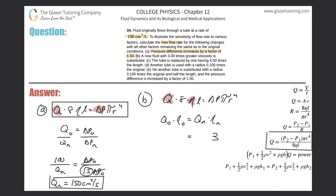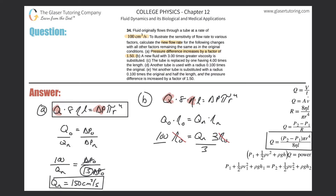We represent the new viscosity as three times the old viscosity. I'm solving for the new flow rate, and the old flow rate was 100 cubic centimeters per second. The viscosities cancel, then I divide both sides by three, and lo and behold, the new flow rate is 100 over three — about 33.3 cubic centimeters per second.